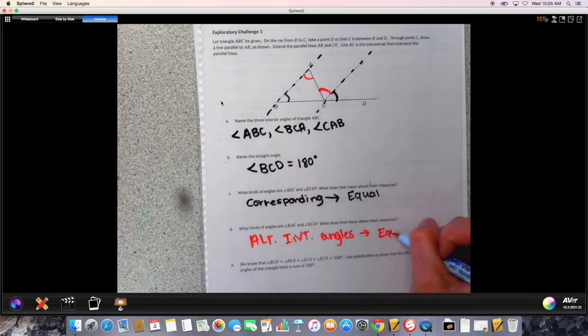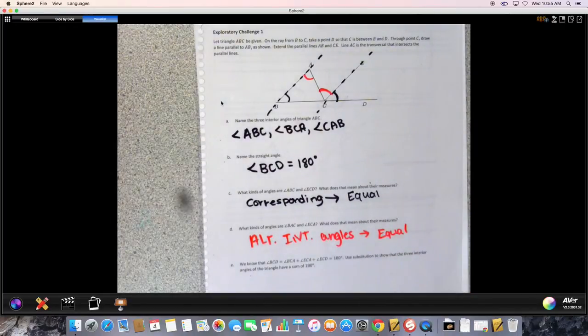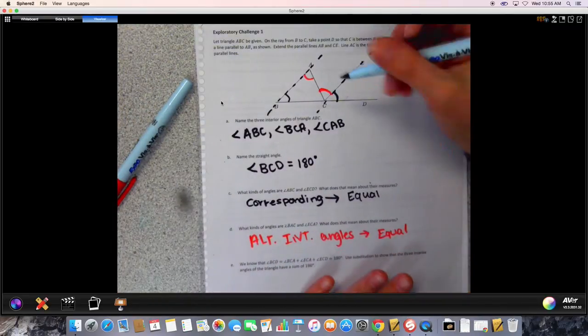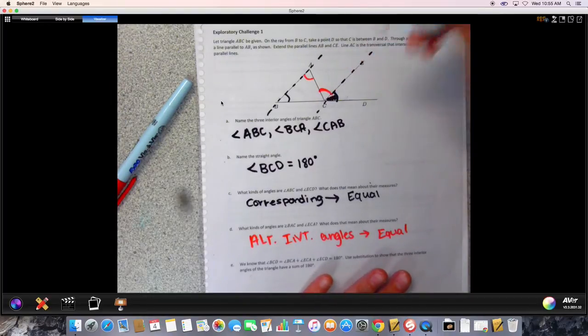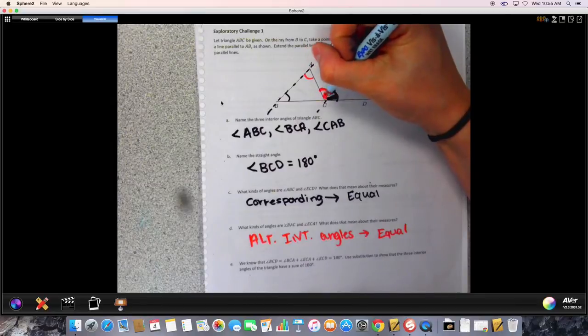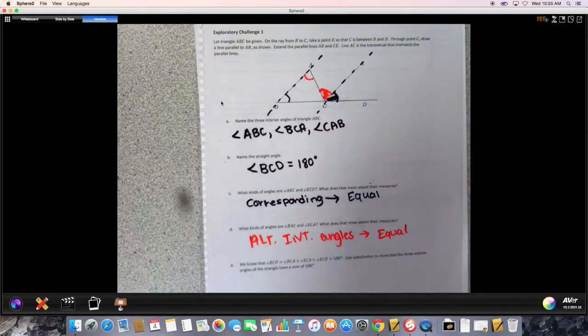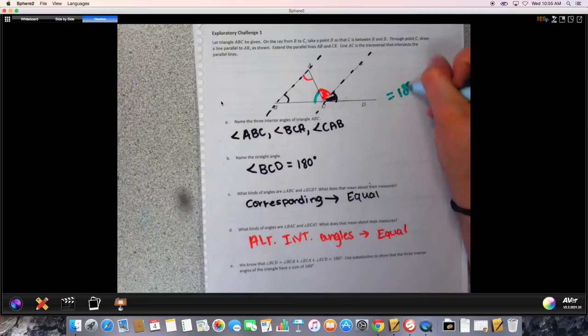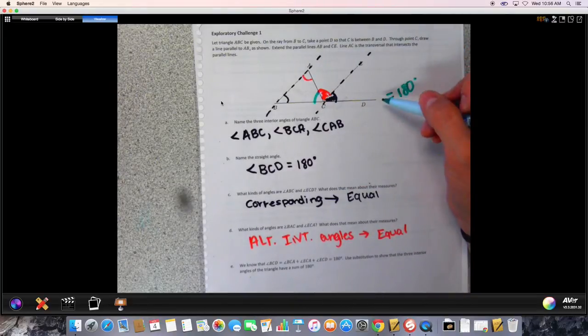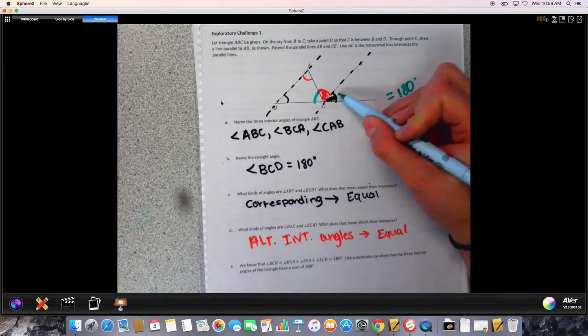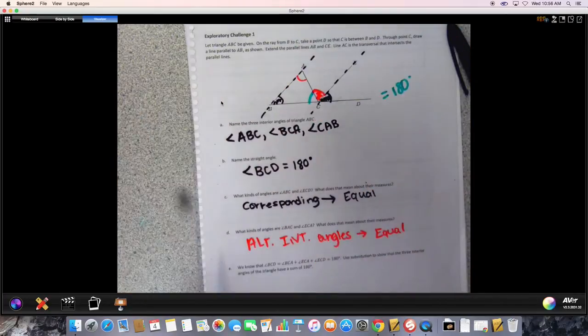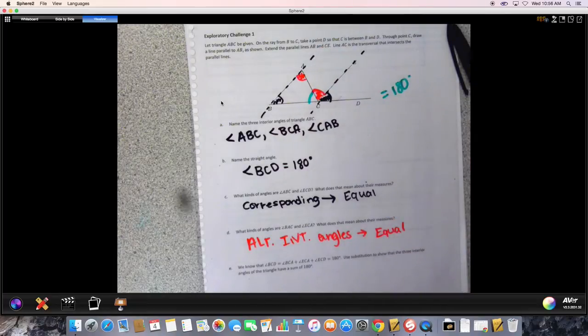What we're trying to show is that our triangle should equal 180 degrees all together. This angle right here plus this angle right here plus this angle right here should equal 180 degrees because it's all on the same line. Using that logic, since this angle is equal to this one and this angle is equal to this one, it follows that our triangle is also equal to 180 degrees.